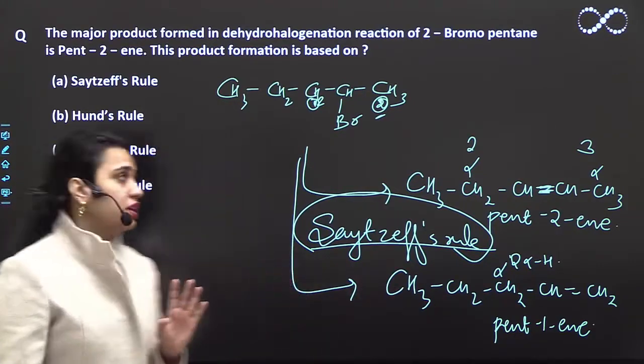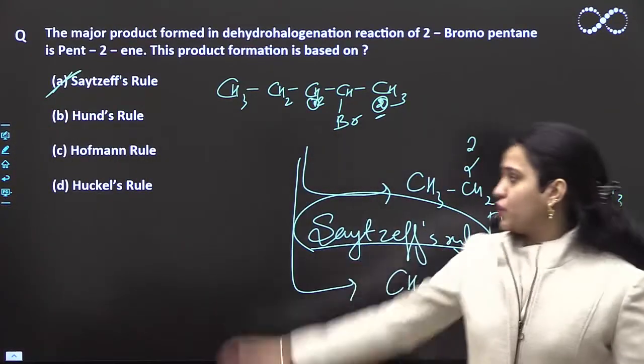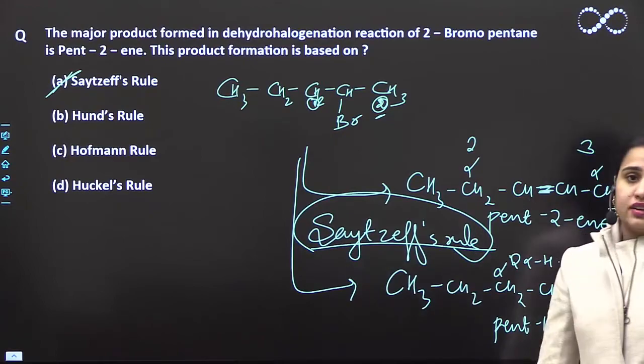If only this is working, then more substituted alkenes will be formed. So this is due to Saytzeff's rule. So option A is correct. Thank you.